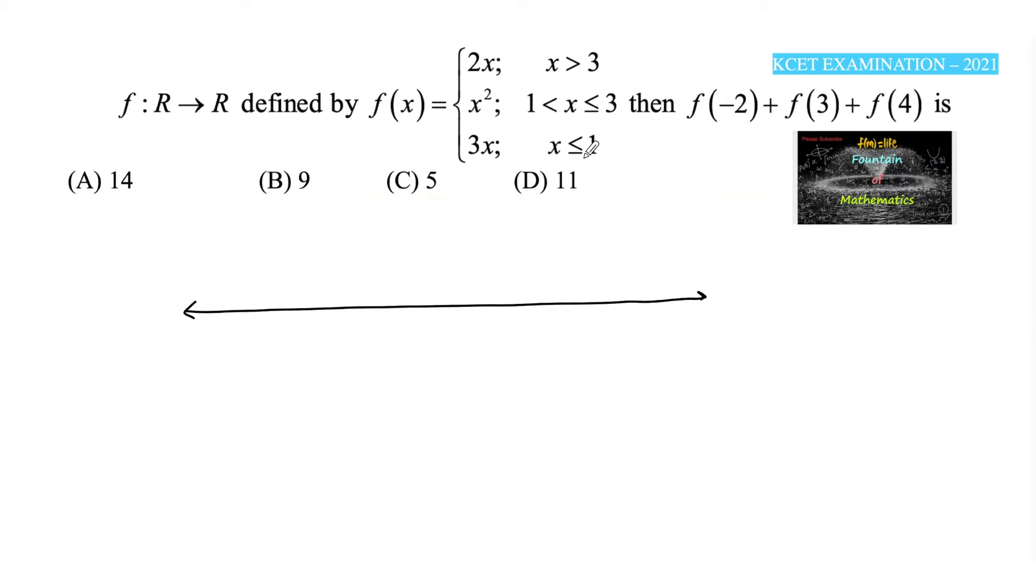For x greater than 3, we have 2x. For x between 1 and 3, including 1 and 3, we have x squared. For x less than or equal to 1, we have 3x.